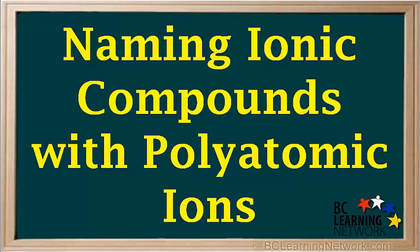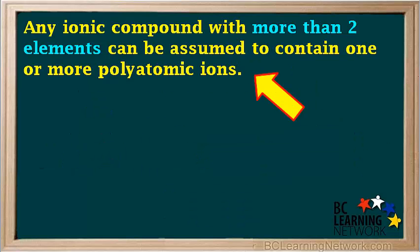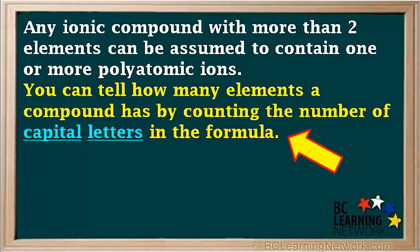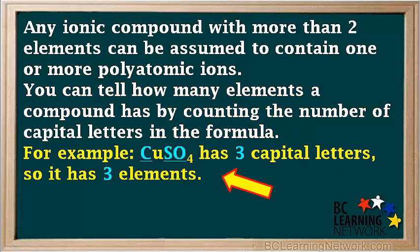Now we'll show you how to name ionic compounds with polyatomic ions. With the compounds we're dealing with in Science 10, if an ionic compound has more than two elements, then it can be assumed to contain one or more polyatomic ions. You can recognize an ionic compound because it always starts with either a metal or the ammonium ion, NH4. Because the symbol for every element contains one capital letter, you can tell how many elements a compound has by counting the number of capital letters in the formula. For example, CuSO4 has three capital letters, so it has three elements: copper, sulfur, and oxygen.